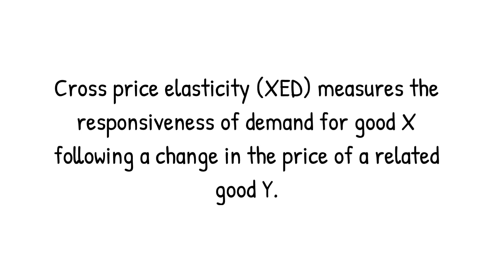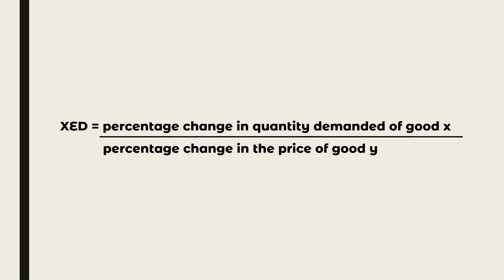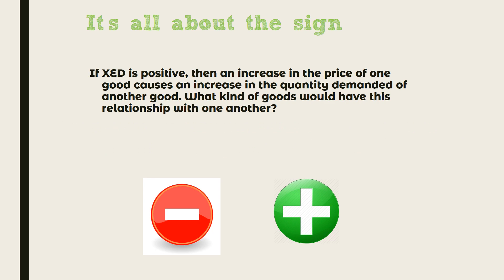Cross price elasticity, XED, measures the responsiveness of demand for good X following a change in the price of a related good Y. XED is calculated using the formula: percentage change in quantity demanded of good X divided by the percentage change in the price of good Y.